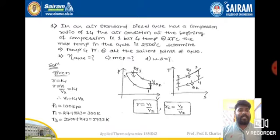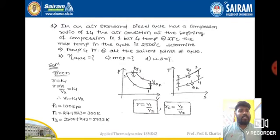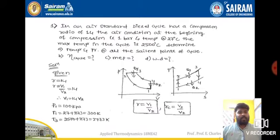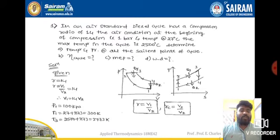First we need to draw the PV and TS diagrams. In the diesel cycle, these diagrams are slightly different from the Otto cycle. The only difference is in the 2-to-3 process: in the Otto cycle, the 2-to-3 process is at constant volume, but in the diesel cycle the 2-to-3 process is at constant pressure. That is the only difference between the Otto and diesel cycles.